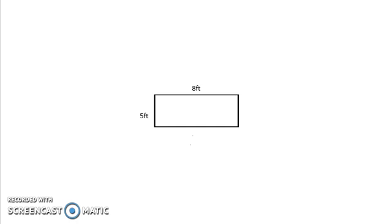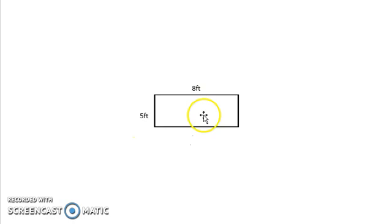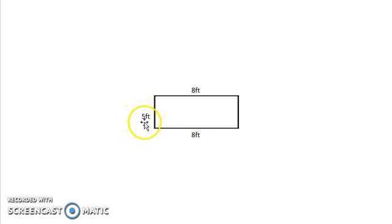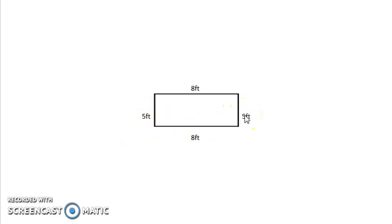The length of the space is 8 feet and the width of the space is 5 feet. Remember, opposite sides of a rectangle are parallel. So if the length of Ms. Smith's available space is 8 feet, then the opposite side or the parallel side will also measure 8 feet. The width of Ms. Smith's space is 5 feet, so the opposite side or the parallel side will also measure 5 feet.